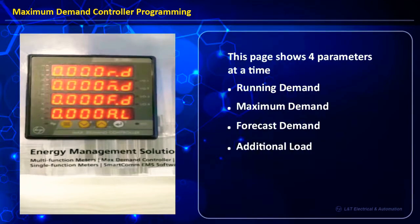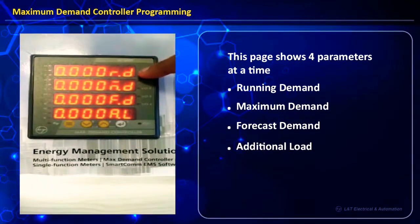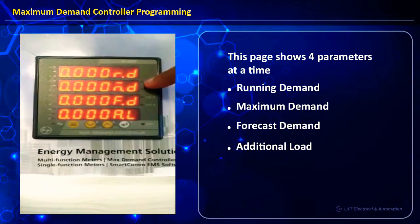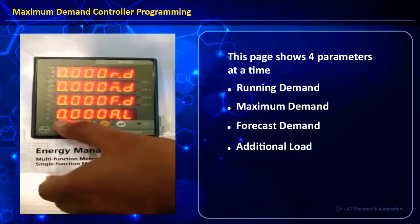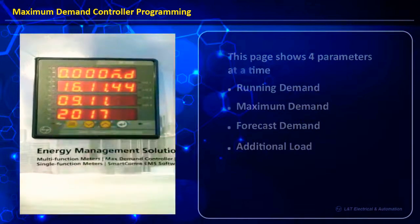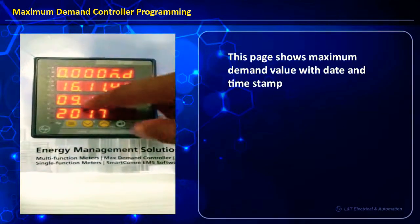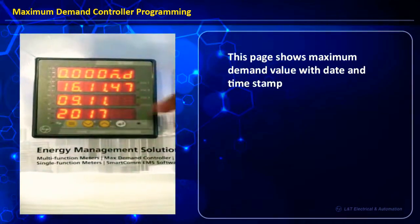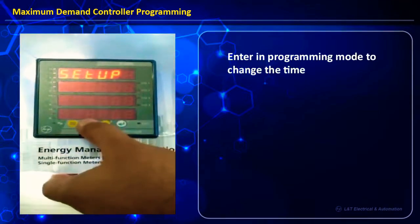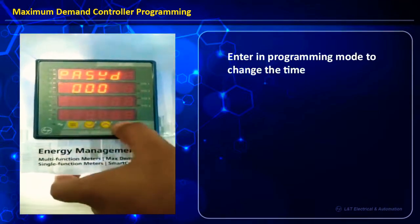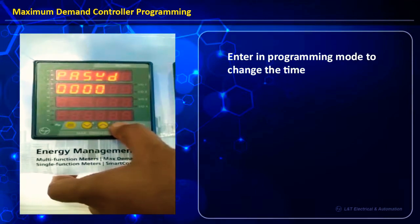On the screen you will see four parameters continuously displayed: running demand, maximum demand, predicted demand, and additional load. You can see maximum demand along with the time and date it occurred. We go into programming mode and enter the correct password.